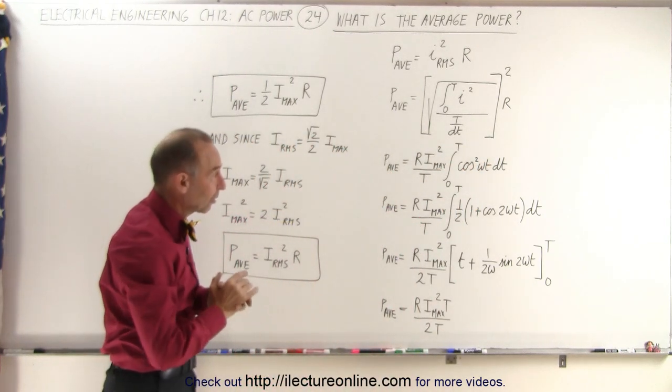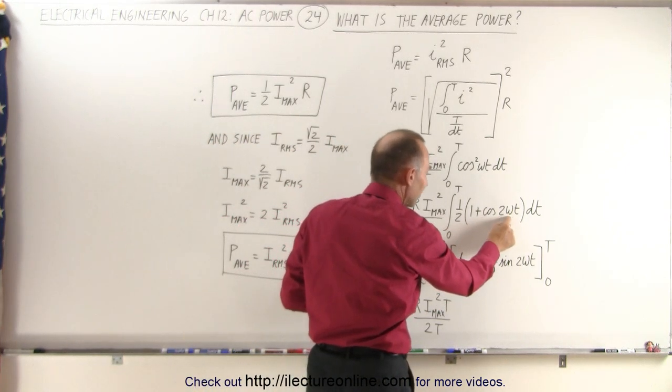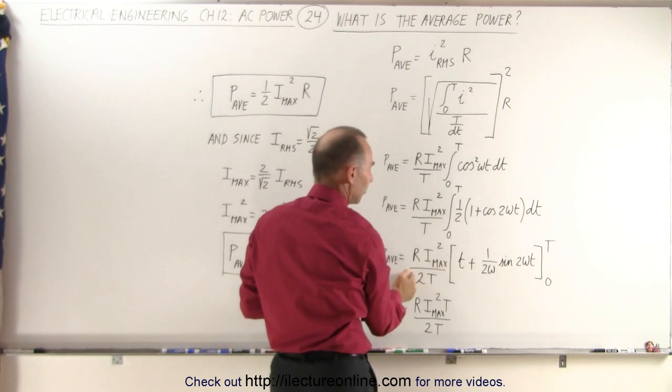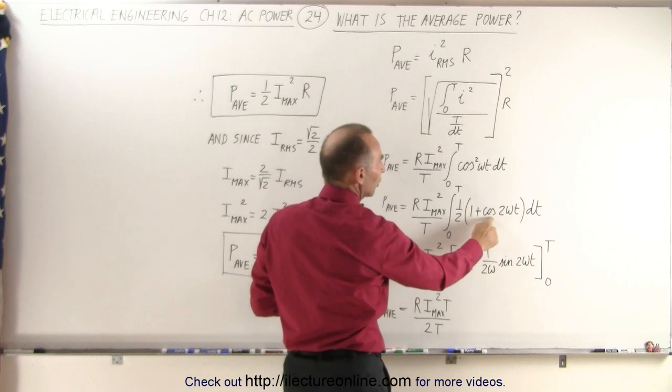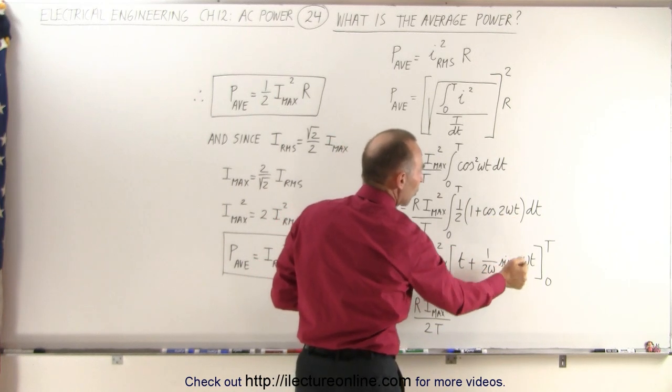To integrate the cosine squared, we can write as 1 half times 1 plus the cosine of twice the angle. The integral of 1 times DT is T, and the integral of the cosine of 2 omega T is 1 over 2 omega times the sine of 2 omega T.